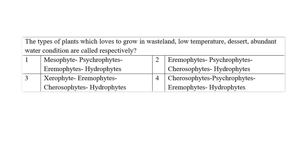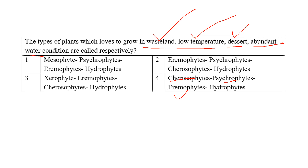Question three: The types of plants which love to grow in wasteland, low temperature, desert, and abundant water conditions respectively. Plants that grow in wasteland are called Chersophytes. Plants that grow in low temperature are called Cryophytes. Plants that grow in the desert are called Eremophytes. And plants that grow in water conditions are called Hydrophytes. So the fourth option is the right answer.